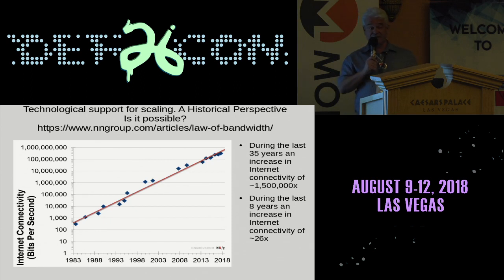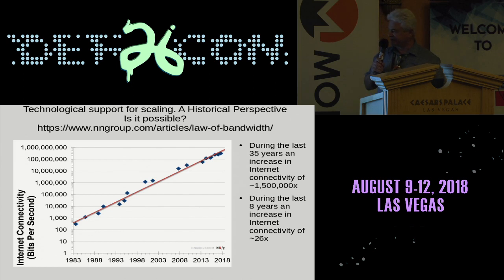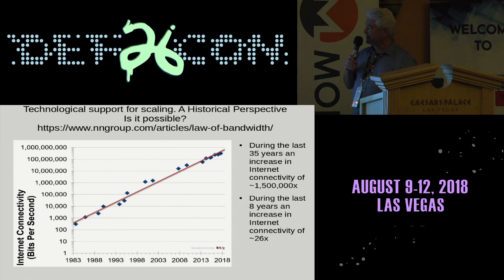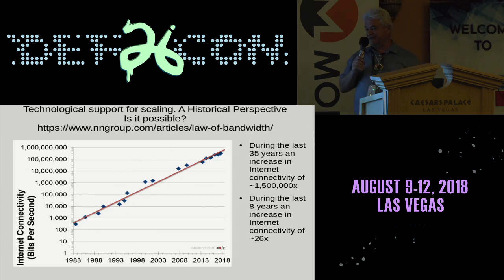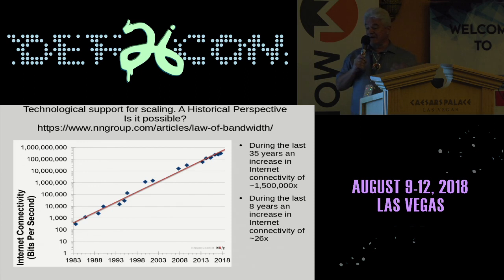My next slide shows bandwidth — the high end in the United States, but it's a good indicator. From 1983 to 2018, on a log scale, we see about an increase in internet connectivity of 1.5 million times in the amount of bandwidth. Even more interestingly, in the last eight years alone, we see an increase in connectivity of approximately 26 times.